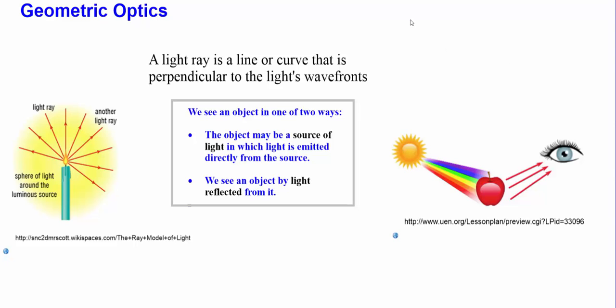Let's talk about geometric optics. Geometric optics is going to be dealing with how light interacts with the environment. We're going to be talking about things like mirrors, reflection, refraction, and lenses.